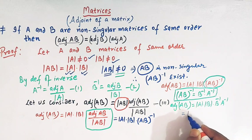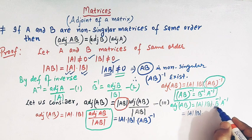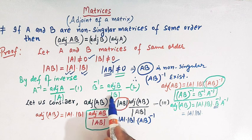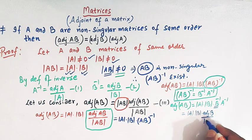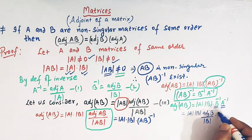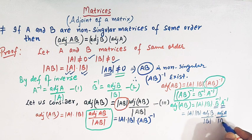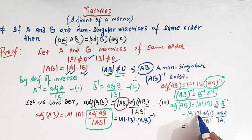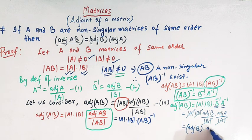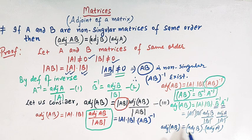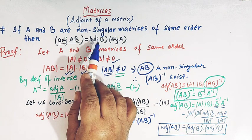Now we can write det(A) times det(B) times B inverse times A inverse. For B inverse we write adjoint of B divided by det(B), and for A inverse we write adjoint of A divided by det(A). Since det(A) and det(B) are real numbers, these quantities cancel, and we are left with adjoint of B times adjoint of A. So we have the desired result: adj(AB) equals adj(B) times adj(A).